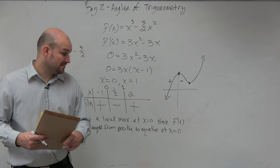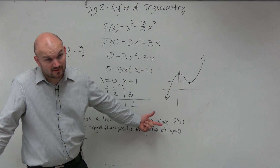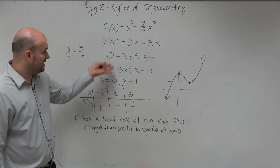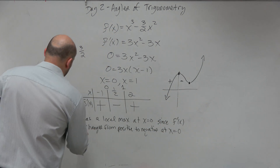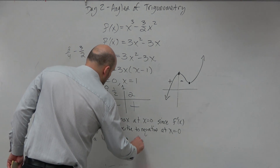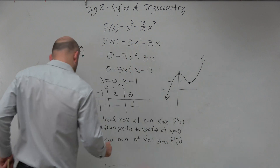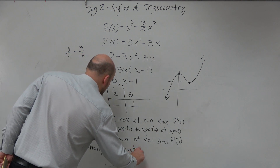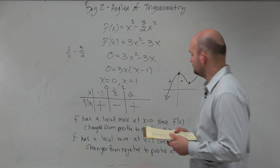Look at the reasoning: I'm saying f has a local max at x equals 0, explaining it with the first derivative test — the derivative changes from positive to negative. Don't just say it's the maximum because it's the highest value. You need to explain why. Likewise, f has a local min at x equals 1 since f prime of x changes from negative to positive at x equals 1.